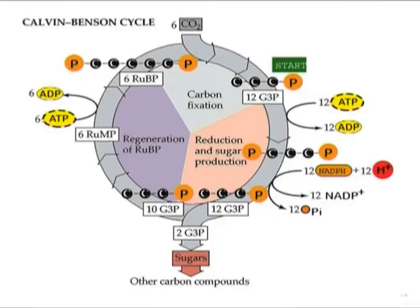ADP and NADP+ are not really products — they are regenerated and later used again in the light-dependent reactions. Each G3P molecule is composed of 3 carbons. To create 1 surplus G3P requires 3 carbons and therefore 3 turns of the Calvin cycle.